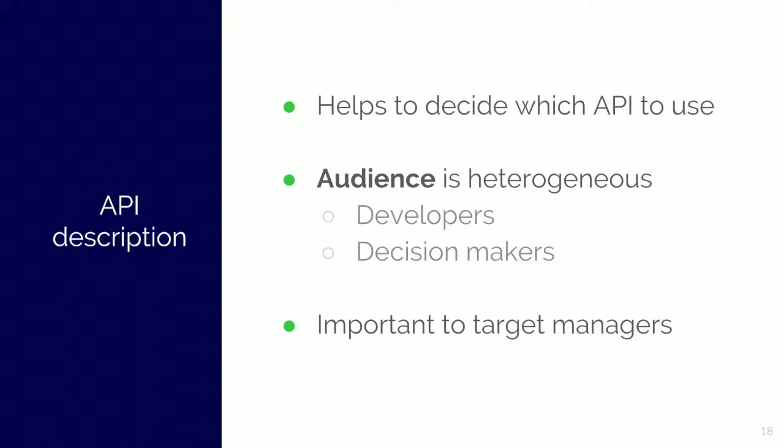The target audience of the API description pages is heterogeneous. It is not only for developers who are actually integrating the API, but for decision-makers too, who decide which API will be used during a project. If there is only reference documentation available, then a manager or a decision-maker with less technical knowledge becomes frustrated and leaves the portal, or maybe tries to find another solution from another provider with better description, even if that API itself is less great. So that's why it is critical to address this audience on the portal, and this is exactly what API description pages do.